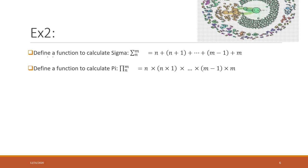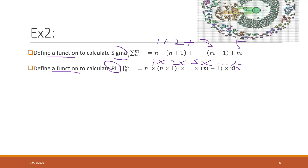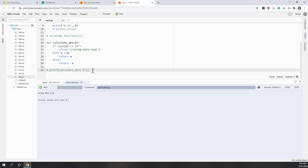We want to define two functions: one to calculate sigma and one to calculate pi. Remember in a previous lab we calculated one plus two plus three until five, and one times two times three until five. Now we want to design generic functions that can calculate sigma and pi for any given numbers. You can pause the video here and think about how we can do that using functions.